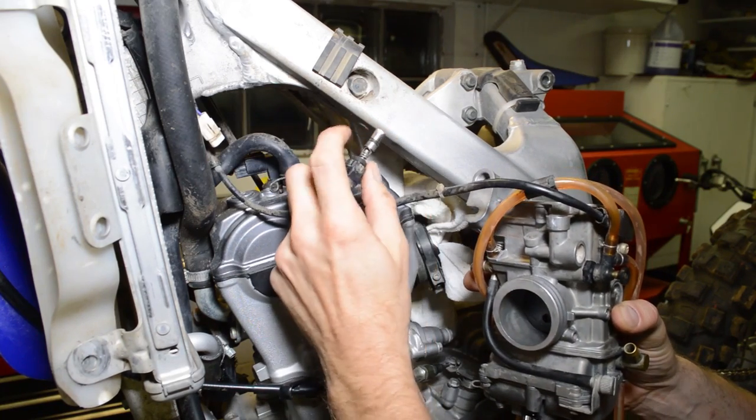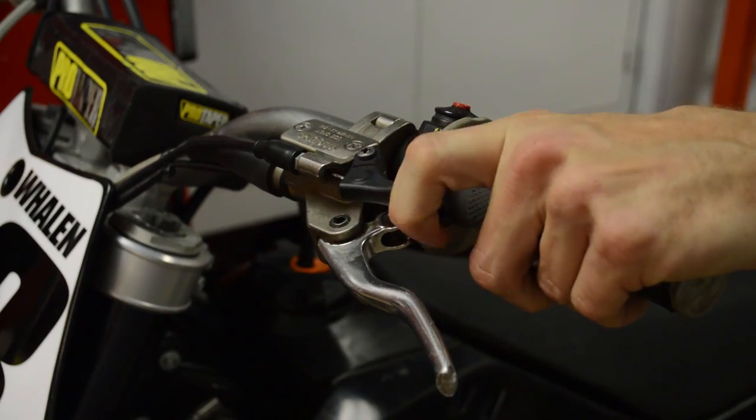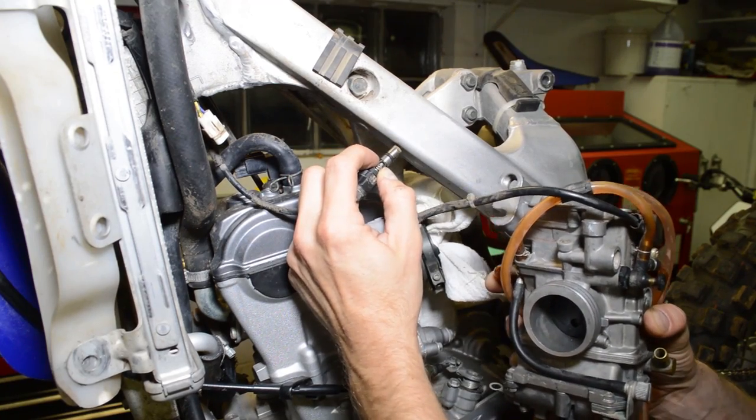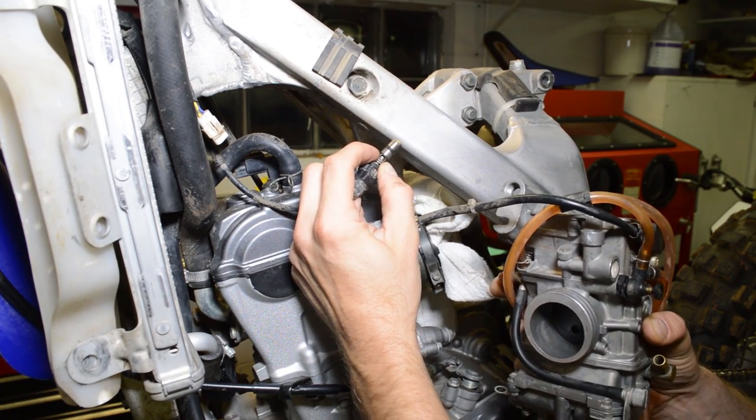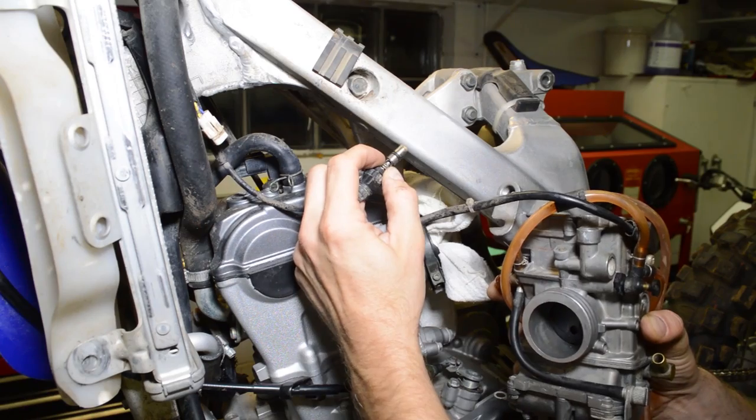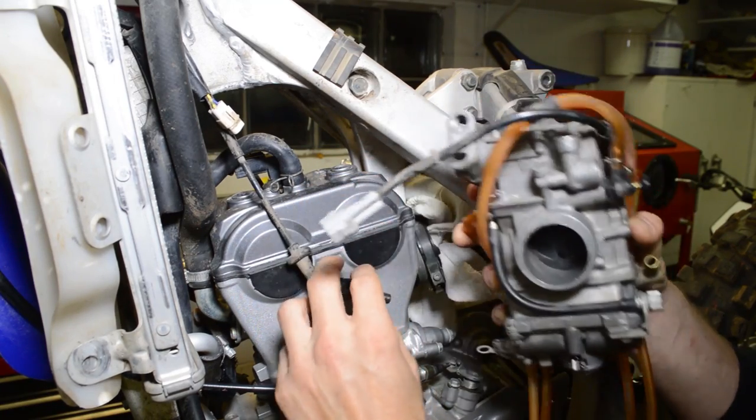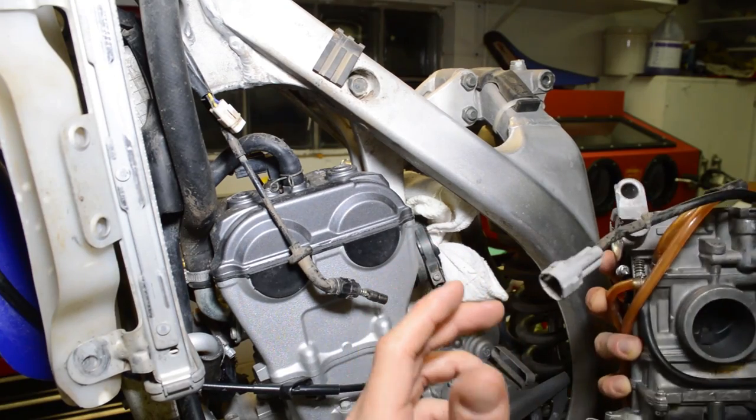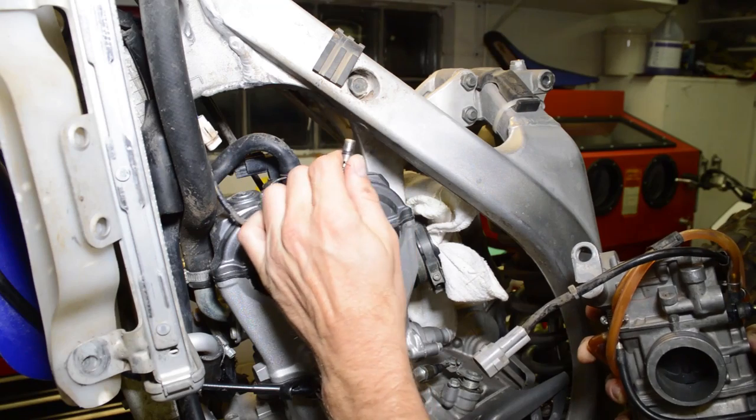All right, guys, so the hot start is basically a plunger like this. It's cable-operated. And you want to use it when your bike is really hot and it won't start or if you dump it in a turn and you pick up your bike and it's probably spilled fuel inside the intake track and it's too rich to start. So you need to lean it out. That's basically what this does.